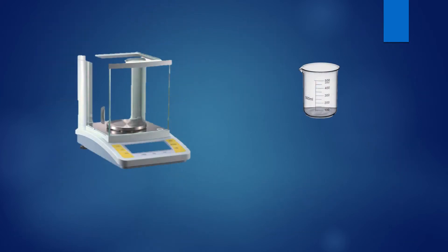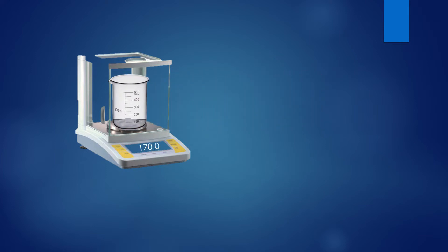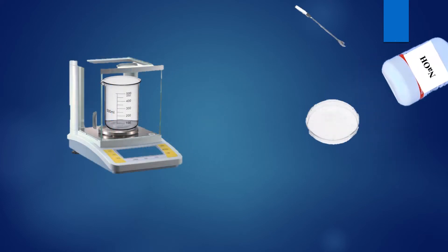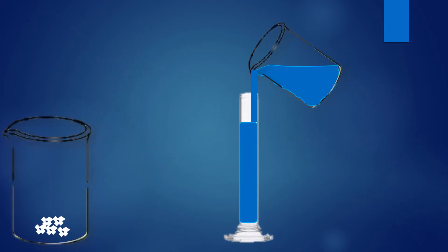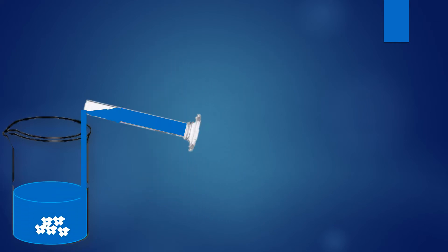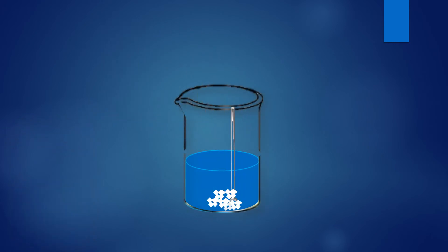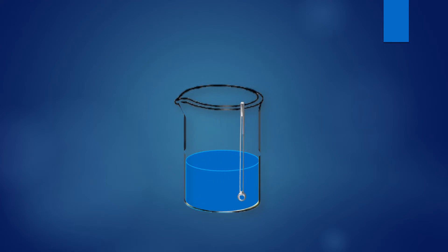First of all, turn the weight balance on. Now place the empty beaker on the weight balance — it will display its weight. Press the tare button so the weight balance shows the weight of the beaker as zero. Take 2 grams of sodium hydroxide in the beaker with the help of a spatula. Then take some water in a measuring cylinder and transfer it into the beaker containing 2 grams of sodium hydroxide. Stir the solution with the help of a spatula and continue stirring until all sodium hydroxide is completely dissolved in water.